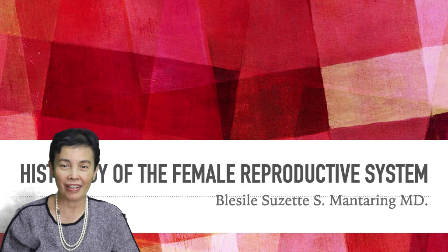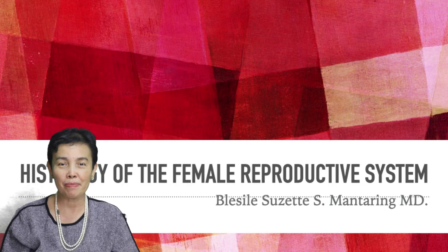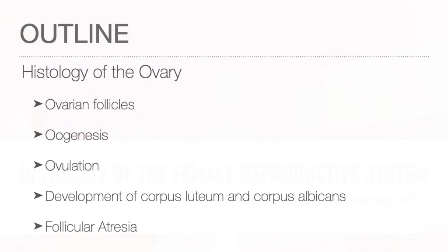Hello, I'm Dr. Blasile Mantaring. Today, I will give the lecture on the histology of the female reproductive system, and this will be divided into three parts. This lecture will talk about the histology of the ovaries, including the formation of the different ovarian follicles and the development of the female germ cell in the process of oogenesis. Events leading to ovulation and changes in ovarian follicles after ovulation will also be described. Ovarian follicles that do not develop into the mature follicle will undergo a process of degeneration called atresia.